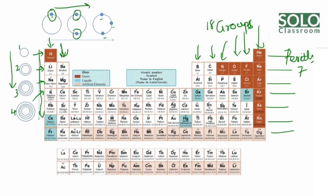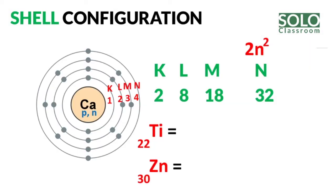What do we learn from this? The chemical properties of an element depend on the electrons in the outermost shell. Elements that react similarly have the same number of outermost shell electrons. In this video, we took a shell configuration and arranged electrons in shells K, L, M, N, filling to the maximum using the 2n² formula.